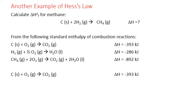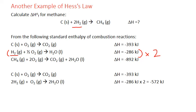Moving to my second reactant, hydrogen gas: I need two molecules of hydrogen gas. The second equation contains hydrogen gas, but only one molecule. I'm going to have to get all the hydrogen from that one step, so I need to multiply this equation by two. Multiplying all coefficients and the enthalpy: that becomes 2H2 plus one O2 (since two times one-half gives me one), and two liquid water molecules. The enthalpy becomes negative 286 times two, or negative 572 kilojoules.